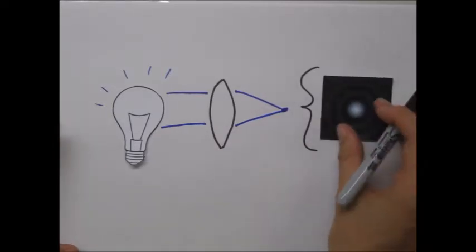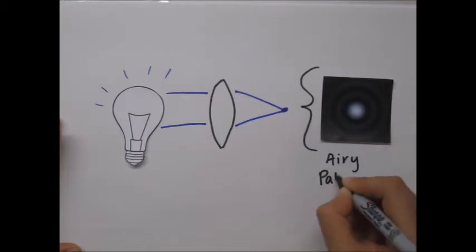This pattern is known as an airy disk, and its diameter depends on the wavelength of light and the properties of your microscope.